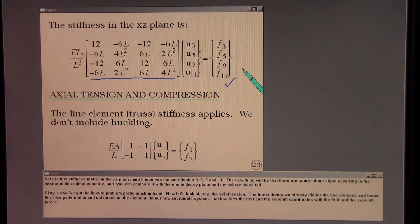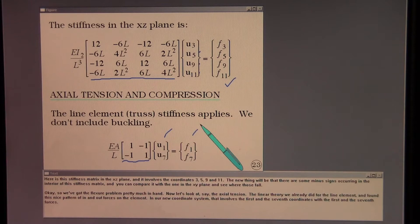Now let's look at the axial tension. The linear theory we already did for the line element and found this nice pattern of forces on the element. In our new coordinate system that involves the first and the seventh coordinates with the first and the seventh forces.